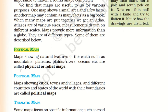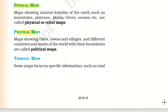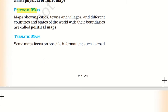Another point is Political Maps. Political Maps basically show cities, towns and villages in different countries and states of the world with their boundaries. These are called political maps.